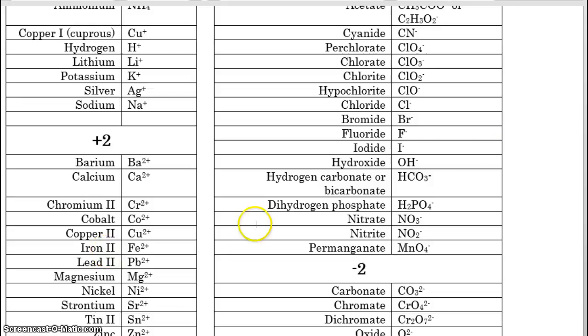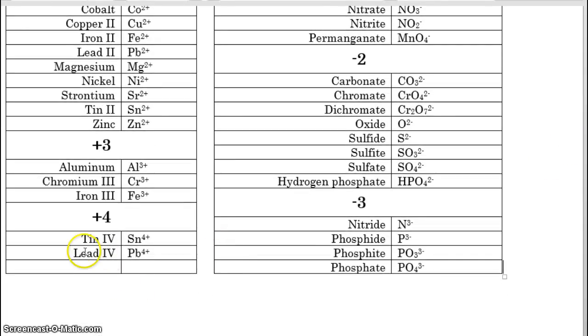There are these Roman numerals here. So why are these Roman numerals there? Well, if you look at the Roman numerals, you'll see that copper, Roman numeral one, is copper with a plus one charge. And then copper with a Roman numeral two is copper with a two plus charge. Lead with a Roman numeral two is a lead with a two plus charge. And if you scroll down farther, you'll see lead again, and here lead Roman numeral four, has a lead four plus charge. So the Roman numerals tells you the charge on the ion.